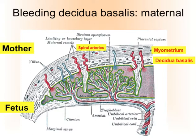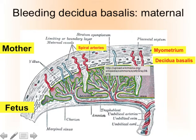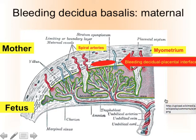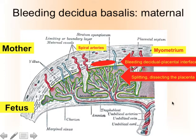This is the diagram of the placenta we're familiar with. Here is the myometrium and here is the decidua basalis — the endometrium just under the myometrium — and here is the placenta. If a small bleeding starts at these blood vessels, there is nothing which could possibly stop the bleeding. The bleeding will separate the decidua and the placental interface, and splitting of the placenta can occur partly or completely.